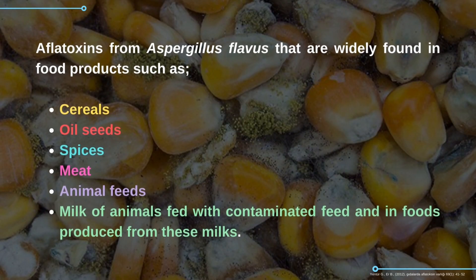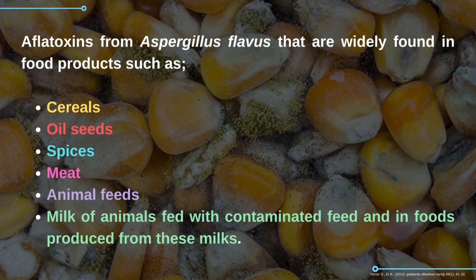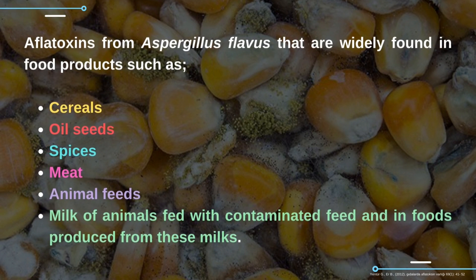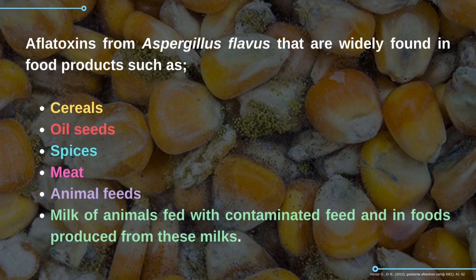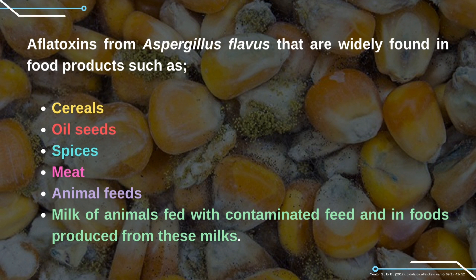Aflatoxins from Aspergillus flavus are widely found in food products such as cereals, oilseeds, spices, meats, animal feeds, and milk of animals fed with contaminated feed, as well as in foods produced from these milks.